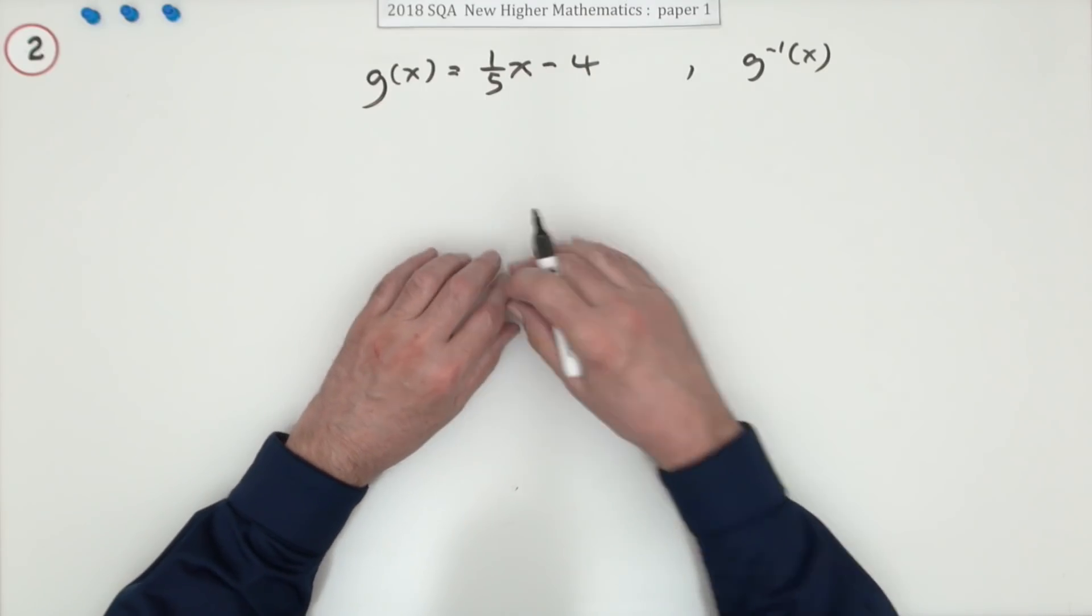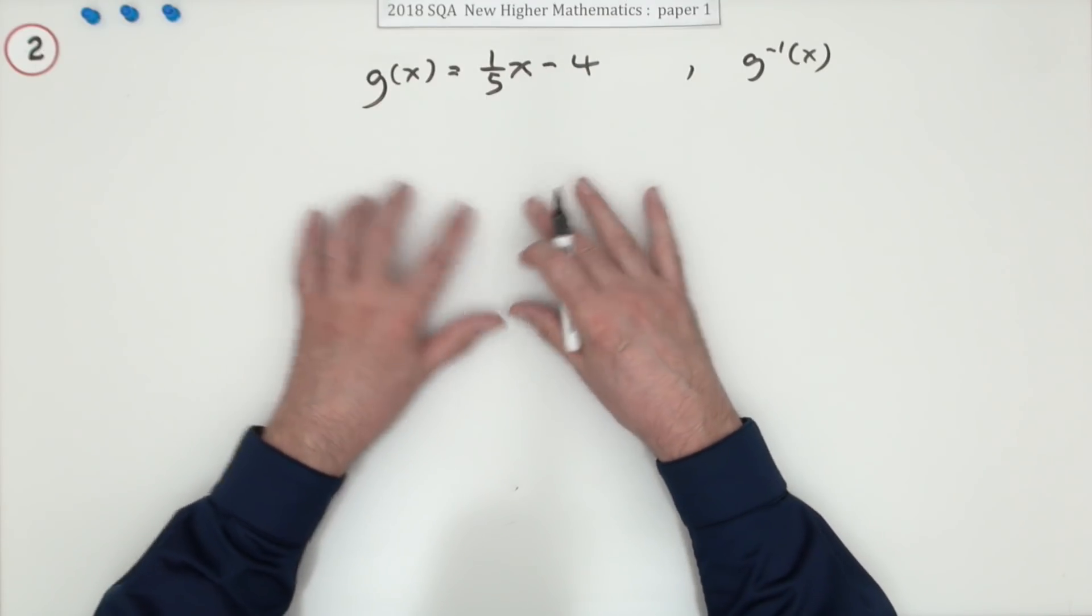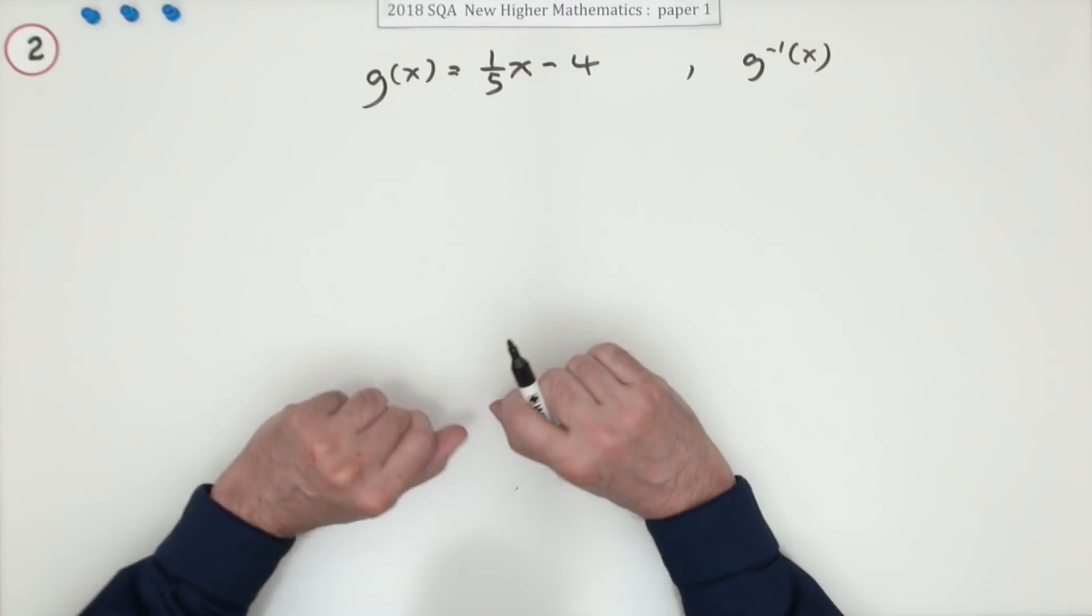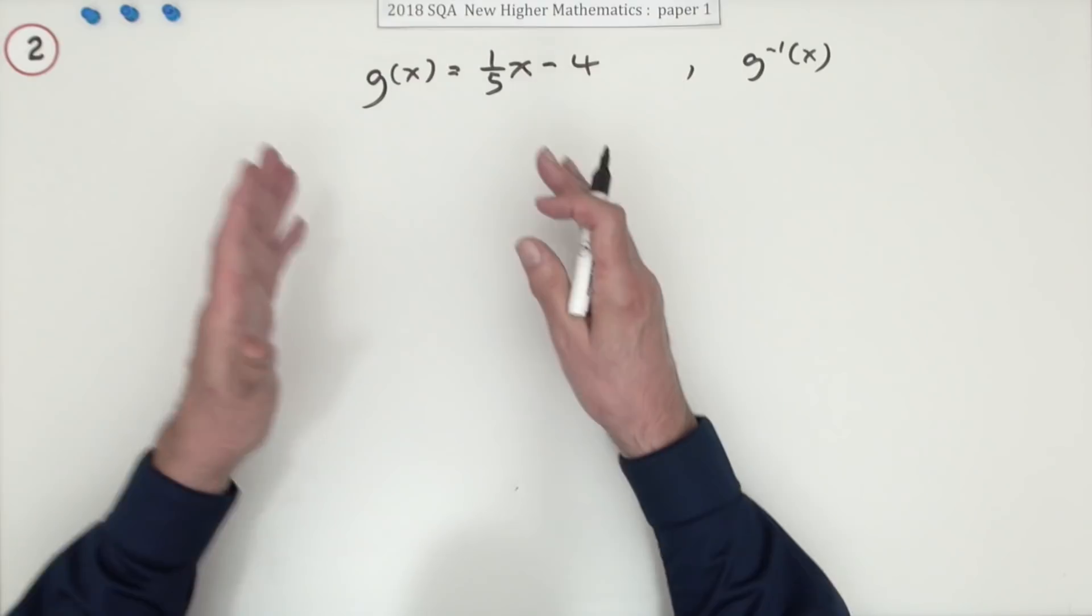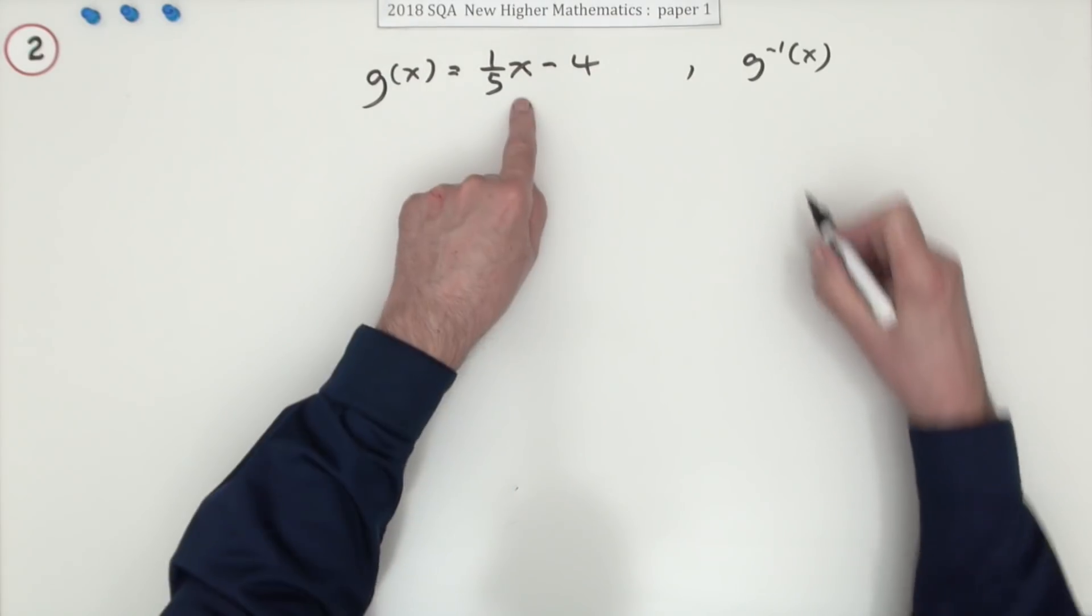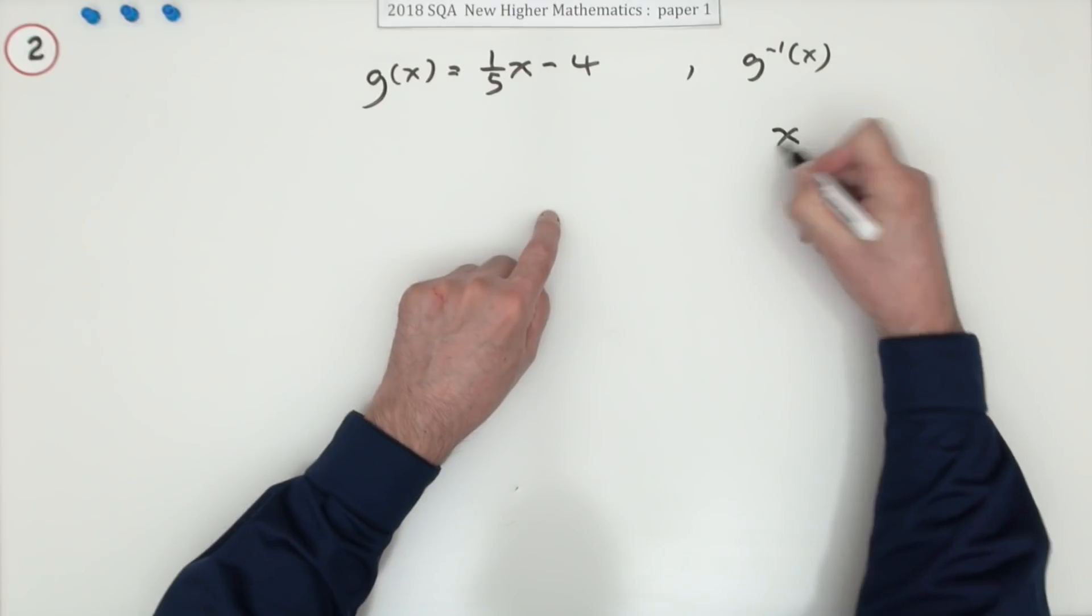The marking scheme gives three methods but two of them are really just the same, one's got a little bit of a contrivance in it. The first way you'd probably do it would be to say: what does this function do? You start with the number x, the function acts on that number and produces an answer y.